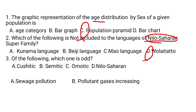Question number 3. Of the following, which one is odd? A. Kushitic, B. Semitic, C. Omotic, D. Nilo-Saharan. Kushitic, Semitic, and Omotic are the superfamilies of language categorized under Afro-Asiatic, but Nilo-Saharan is different. So the answer is D.